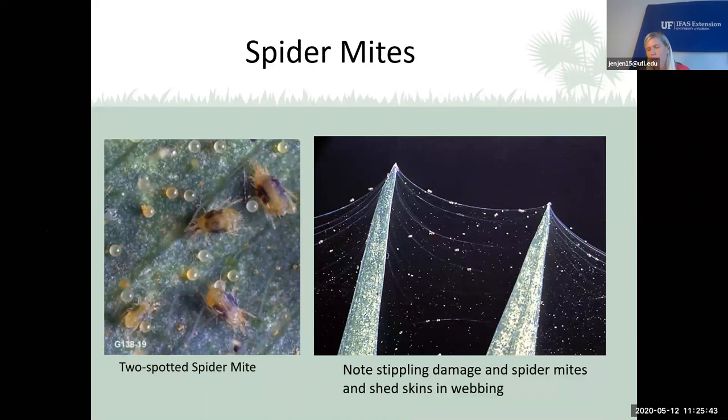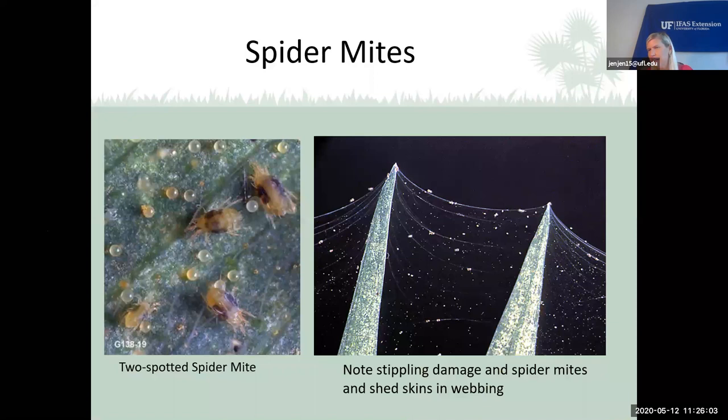Spider mites are actually arachnids, not insects — they have eight legs and can create a spider web. The two-spotted spider mite is probably the most common you'll see on plants, both indoors and in the garden and landscape. With a severe infestation they create webs that help them move from leaf to leaf. You can also see their shed skins in the webbing. They cause discoloration as they suck the juices out of the leaf.